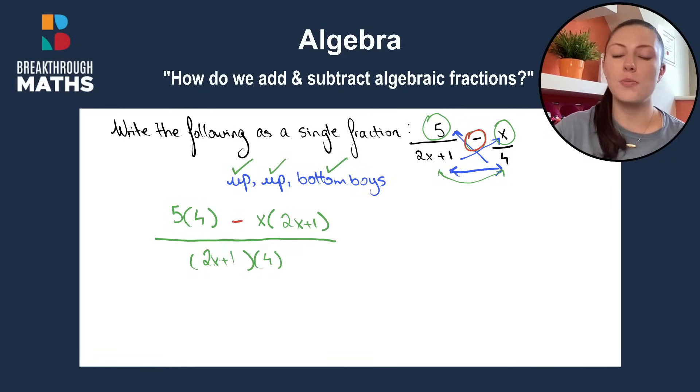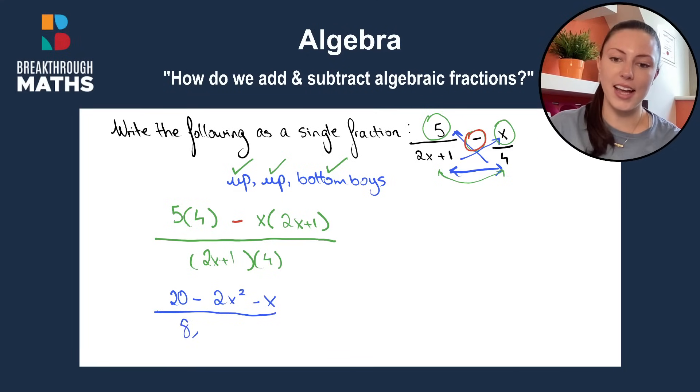Now we just multiply everything out. So five times four is 20 minus x by 2x is 2x squared and minus x by plus one is minus x. All over four by 2x gives us 8x and four by one is plus four.